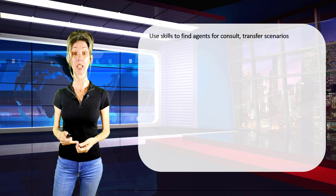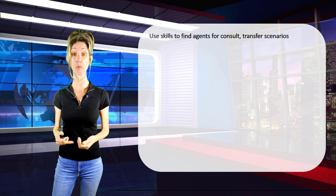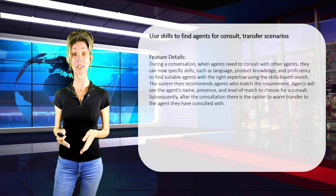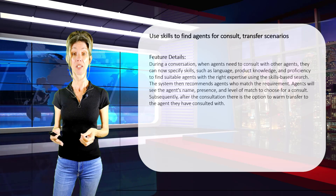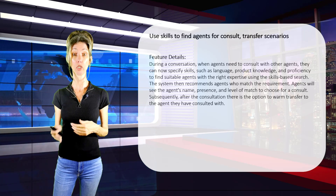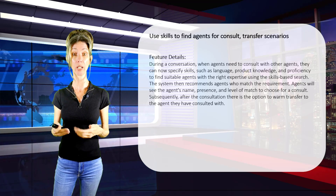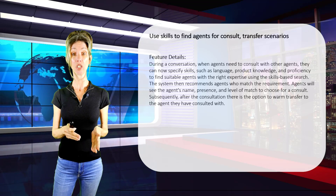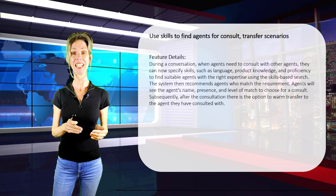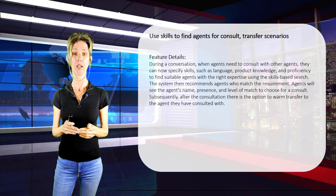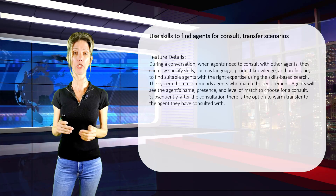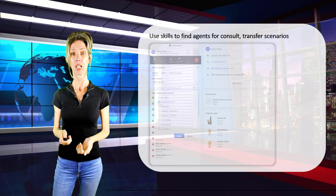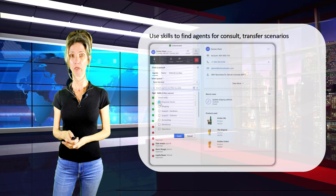Another dialer feature is the ability for agents to find other agents based on skills. My guess is we're assigning skills or characteristics — similar to what we also have in Field Service — to agents, and agents are now going to be able to filter and search for other agents based on selected skills.